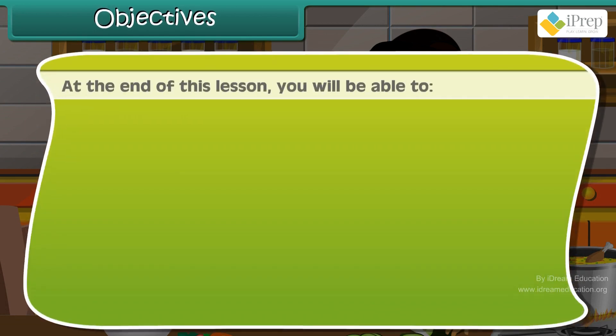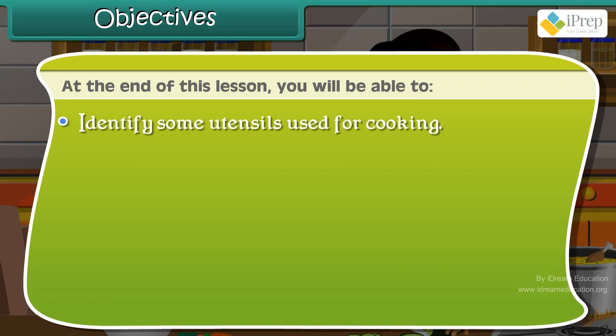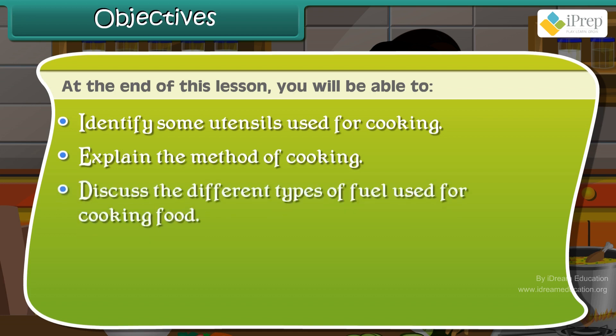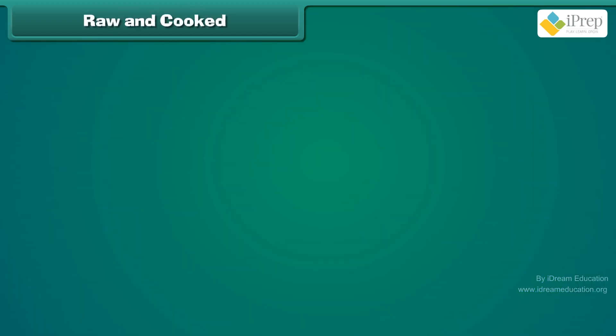At the end of this lesson, you will be able to: identify some utensils used for cooking, explain the method of cooking, and discuss the different types of fuel used for cooking. Food: raw and cooked.